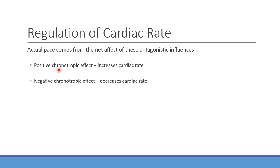Positive chronotropic effects refer to increases in heart rate (chronotropy), distinct from dromotropy, which is the speed of conduction. Positive chronotropes increase cardiac rate; negative chronotropes decrease it. For example, dobutamine — a beta-1 agonist — would be a positive chronotrope. Similarly, inotropes can be positive or negative, referring to effects on contractility.